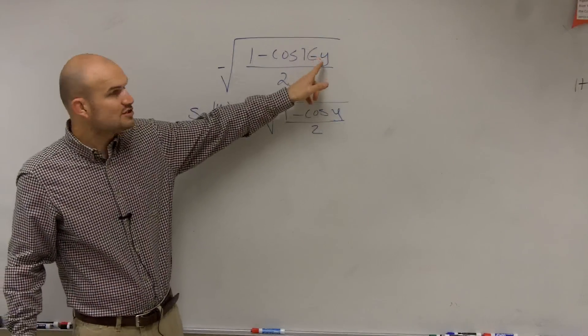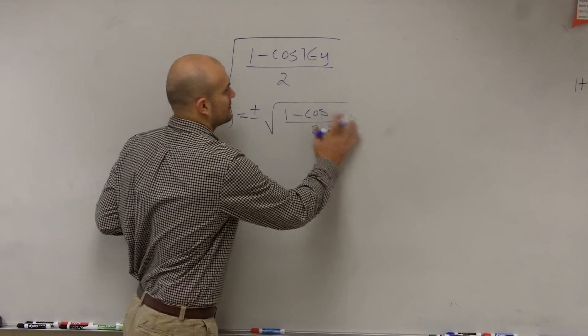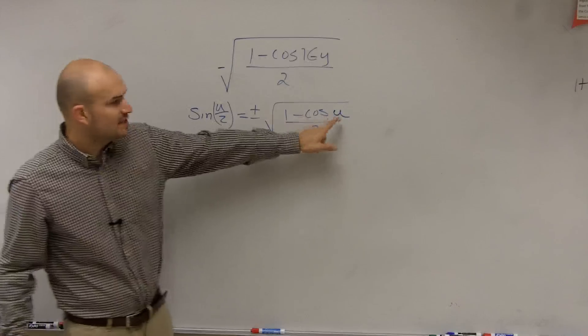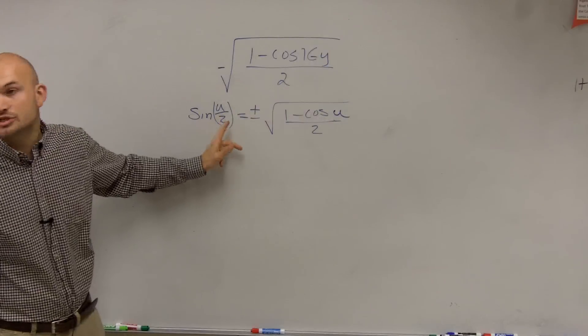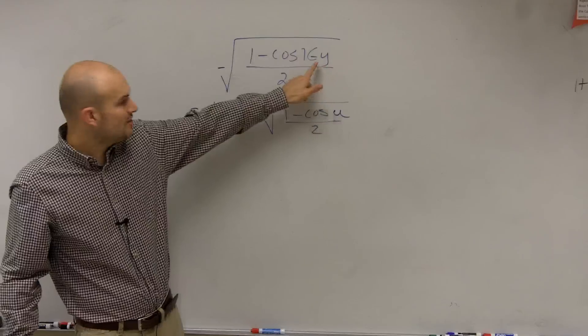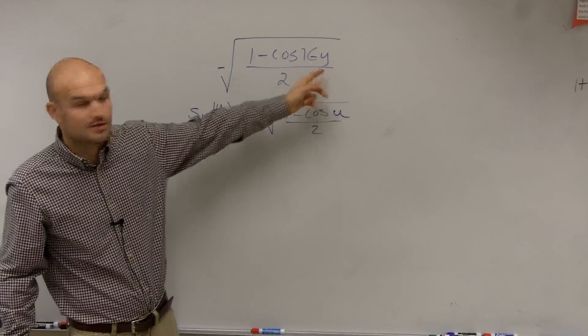if this is u... why am I writing y and u? Here's your general formula. If this is u, then this is u divided by 2. So you can look in your formula and say, oh, this is 16y divided by 2.